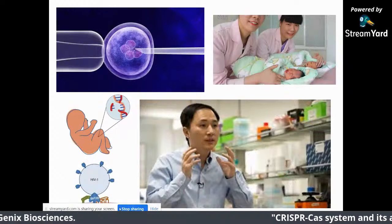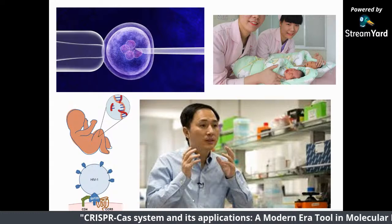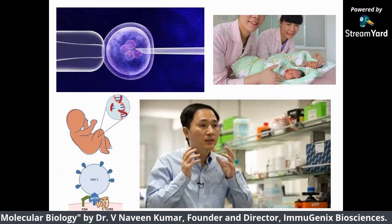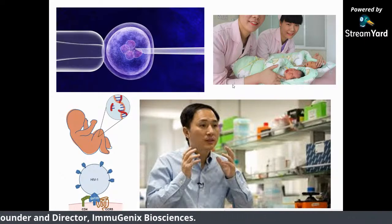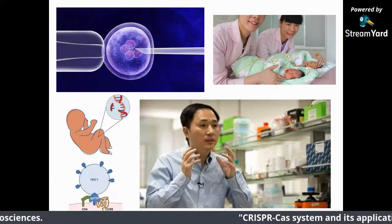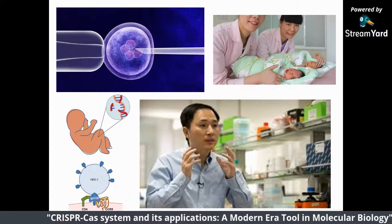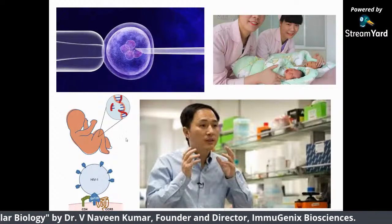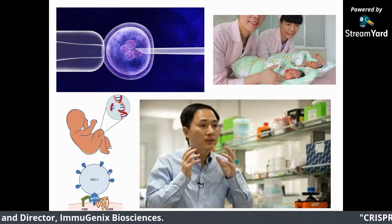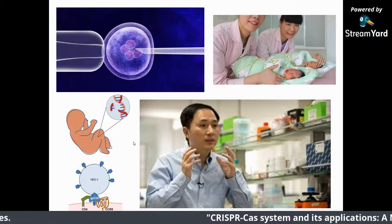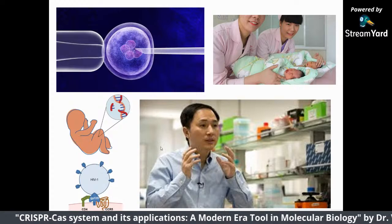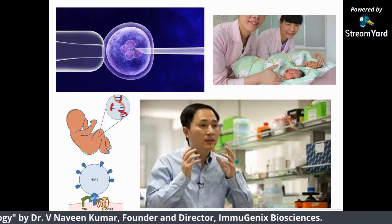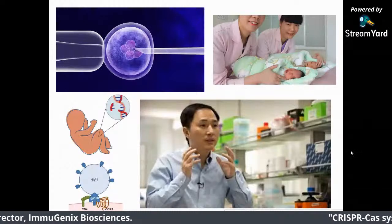Without any permissions or ethical clearance, he modified the CCR5 co-receptor responsible for HIV entry — because both the mother and father were HIV positive. The result was twin babies that are naturally resistant to HIV infection. Even though his work was successful, since he didn't get any ethical clearance, it was a big problem, and now he is in prison in China. In concern with embryo editing, it is still in regulatory aspects — a lot of regulations have to be followed. Otherwise you will be in trouble.